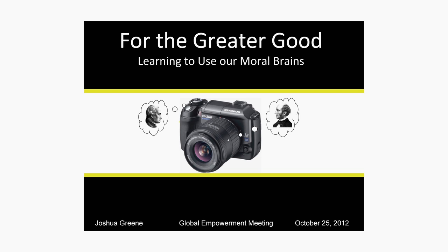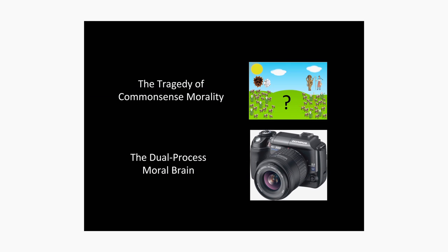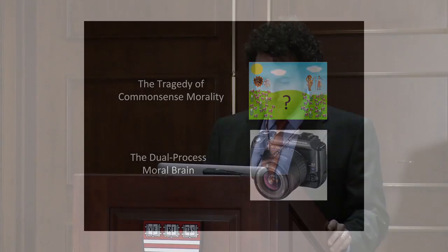I want to put in front of you two ideas, and then there's a larger idea about how these two ideas fit together. I call the first one the tragedy of common sense morality, and the second idea is the dual process moral brain. One is about two kinds of moral problems, and the other is about two kinds of moral thinking, and what I'm going to talk about is how these two kinds of problems and these two kinds of thinking best fit together.